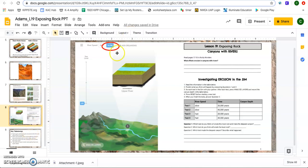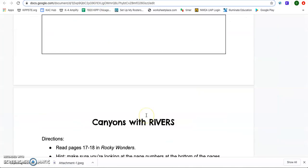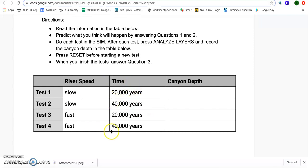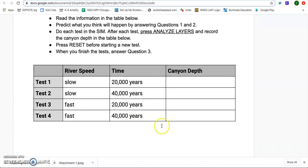Now as you go into your simulation, you are actually going to think about this table. And this is what you're going to do in the sim. You are going to change the river speeds and you are going to actually fast forward time. After you do that, analyze the layers and write your answers here.